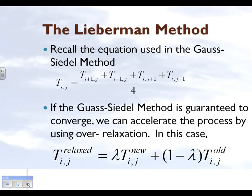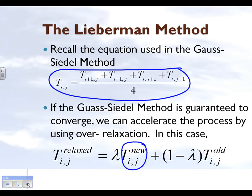So what is the difference in the Lieberman method? We still use the Gauss-Seidel method, but we give weightage to the new temperature which we just found out and the temperature from the previous iteration. We'll take a value of lambda and multiply it to the temperature which we just found out, and we will add to it 1 minus lambda times the temperature from the previous iteration.